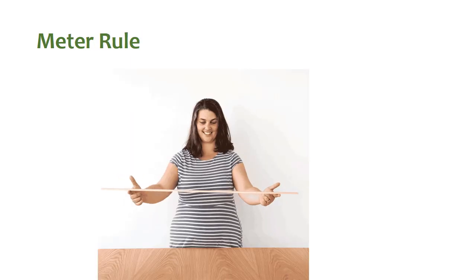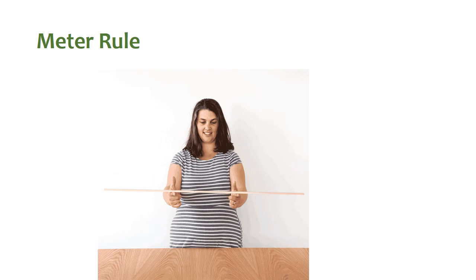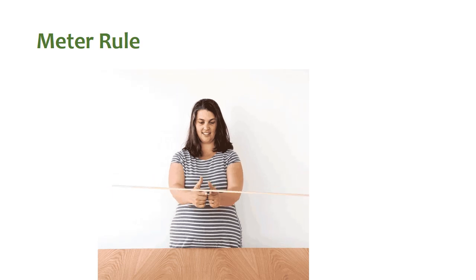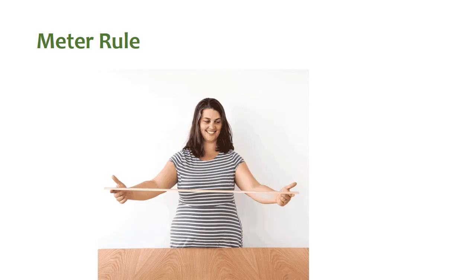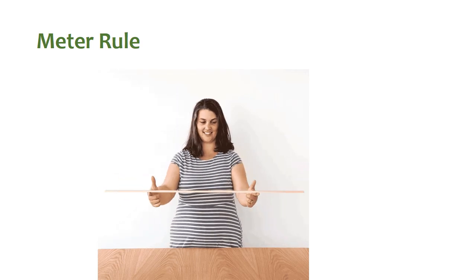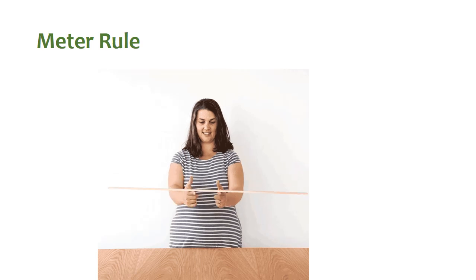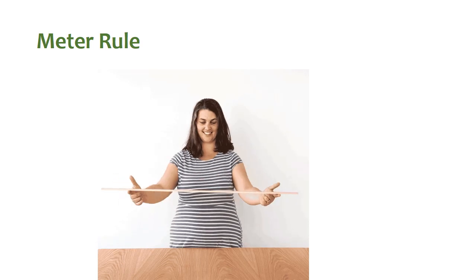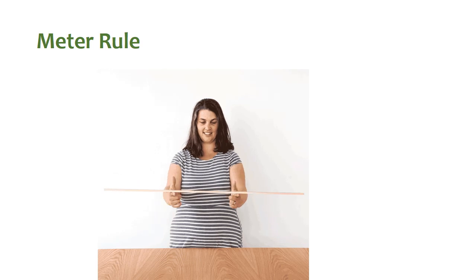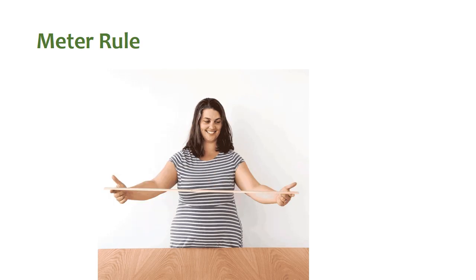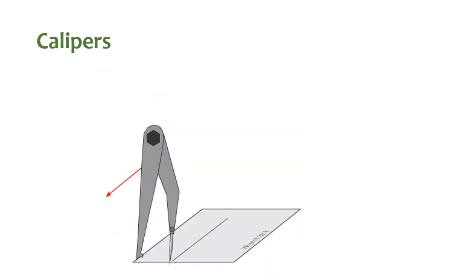Meter rule. Meter rule is a length measuring instrument which measures the distance between two points. It is one meter long, usually used in a practical laboratory, and its least count is 1 cm.